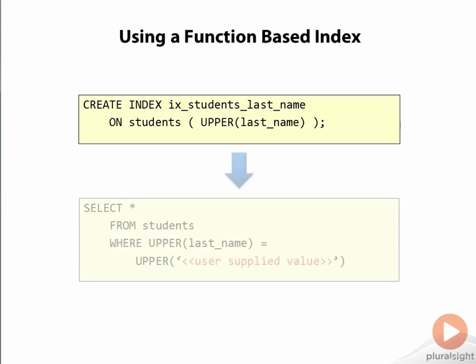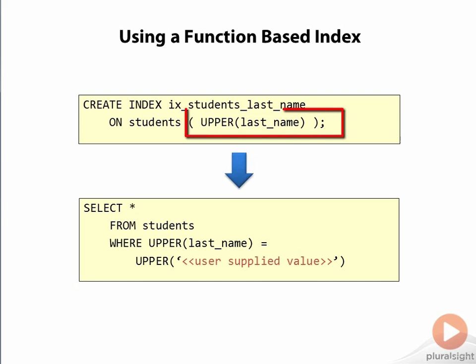Then, when we run our query from the previous slide, Oracle will recognize that the function used in the create index statement and the function used in the where clause match. And the Oracle optimizer then will be able to use the function-based index that was built over this derived value.